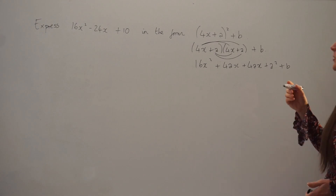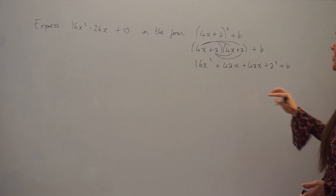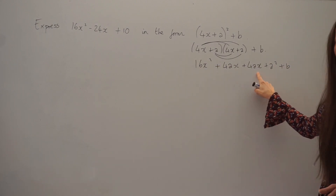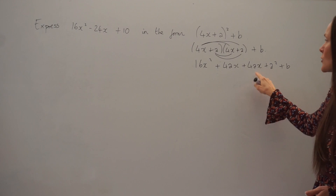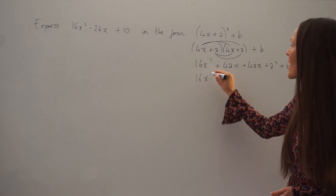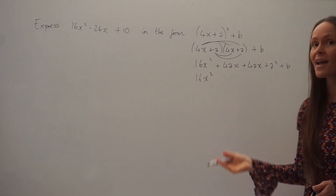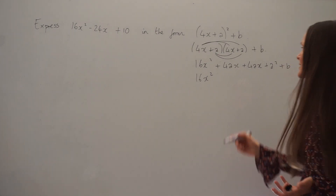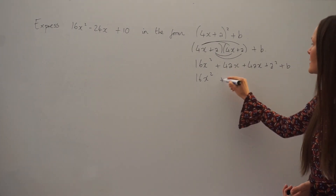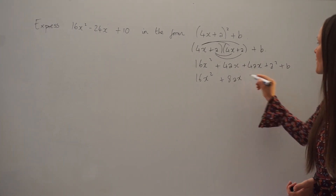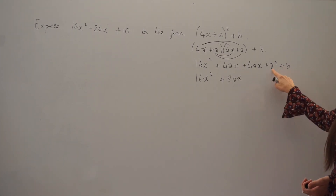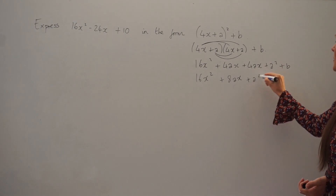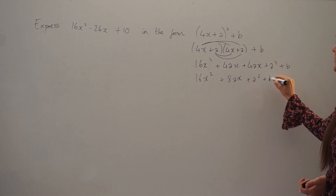Next, I'm just going to tidy this up a little bit. I can simplify the x terms, so I'm going to add those together. If I add 4ax with 4ax, I have 8ax. And everything else stays the same, so a squared plus b goes at the end.